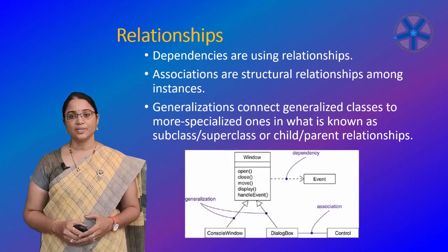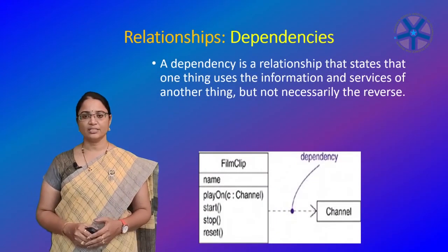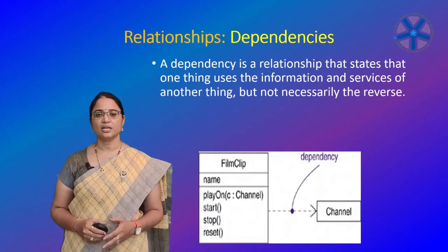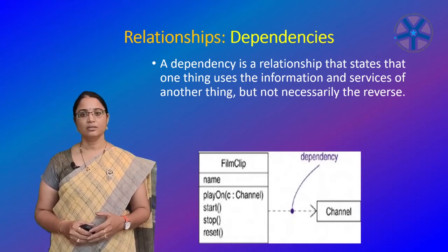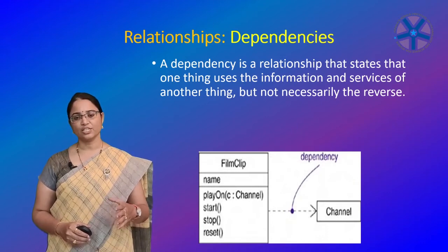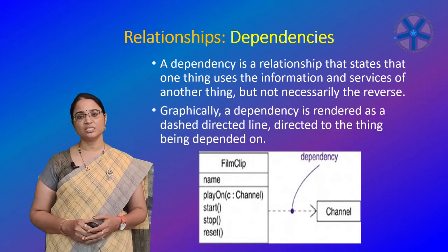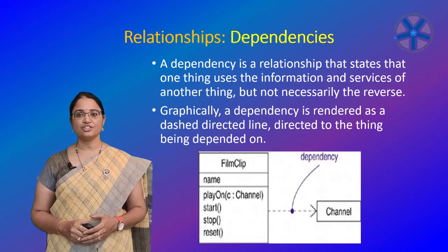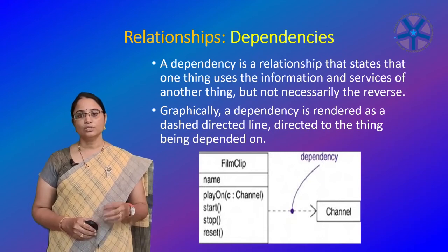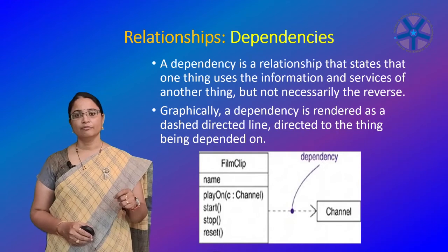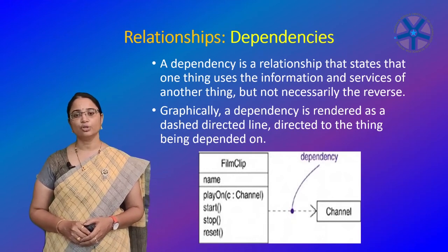The first relationship is dependency. A dependency is a relationship that states that one thing uses the information and services of another thing, but not necessarily the reverse. One class depends on another class for its services. Graphically, a dependency is rendered as a dashed directed line pointing toward the thing being depended on — the arrowhead is shown on the side of the depended-on thing. Choose dependencies when you want to show one thing using another.